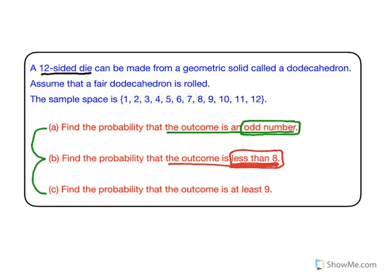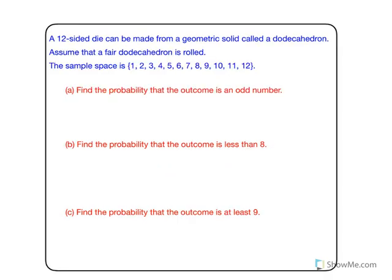The last one is to find the probability that the outcome is at least 9. When they say at least 9, it includes 9 itself, so it means it could be 9 or 10 or 11 or 12. Let's solve this question.